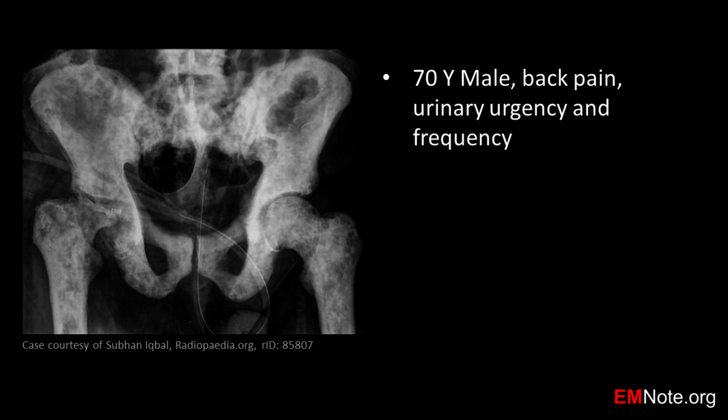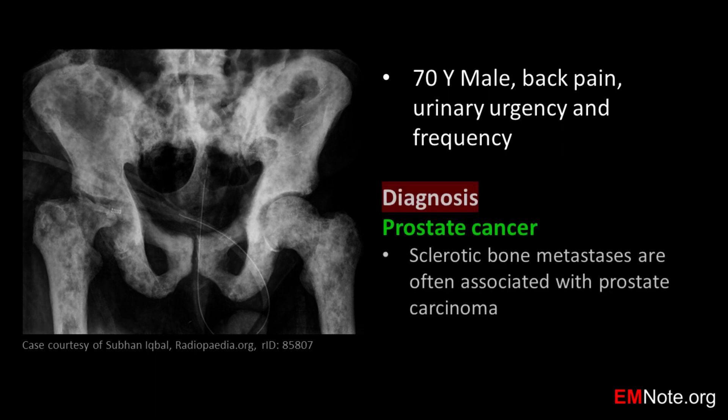This 70-year-old male complains of back pain, urinary urgency, and frequency. What's the likely diagnosis? The diagnosis is prostate cancer with metastases to pelvic bones and the lumbar spine.